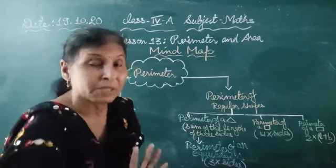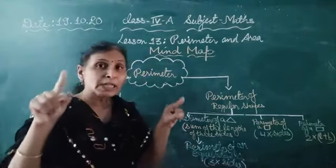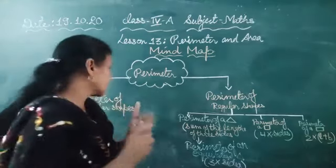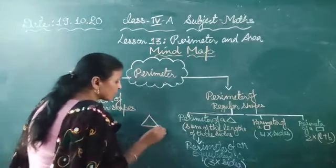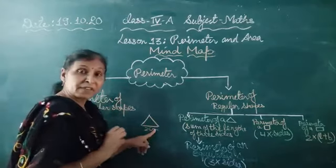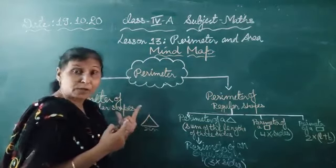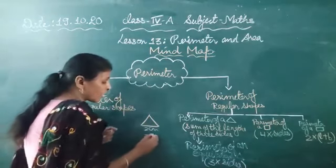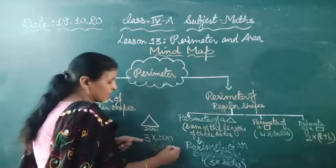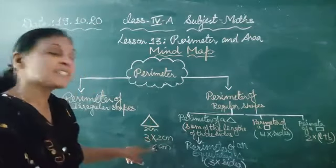Now, how will you find out the perimeter? This is the formula: three multiplied by side. Because all the sides are equal, so we multiply by three. Suppose here one side is 2 cm. You know the equilateral triangle — equilateral means all three sides are equal. So we use this formula: three multiply by 2 cm, that is 6 cm. And the perimeter of the equilateral triangle is 6 cm.